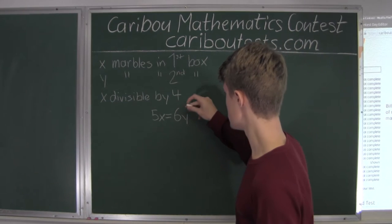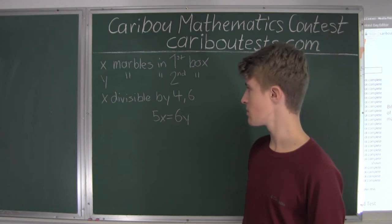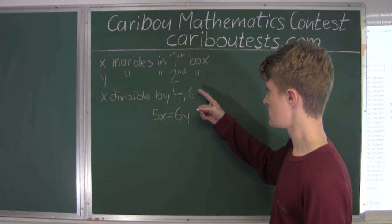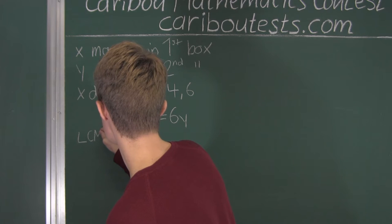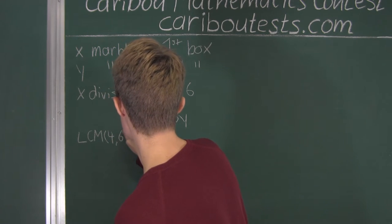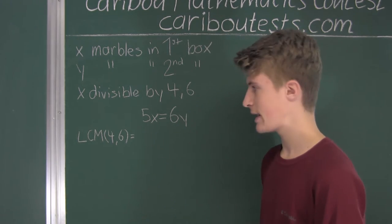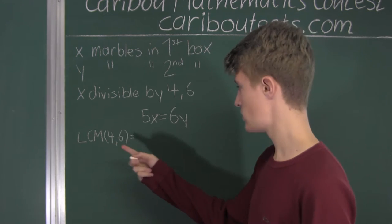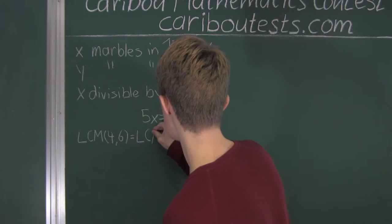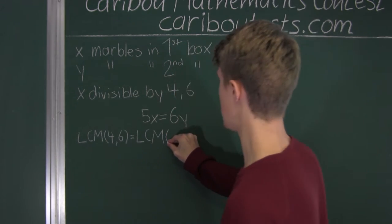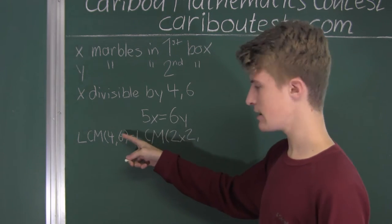So not only is X divisible by 4, but it must also be divisible by 6. That means X must be divisible by the lowest common multiple of 4 and 6. To find the LCM, we find the prime factorization of both numbers: 4 = 2 × 2, and 6 = 2 × 3. Our prime factors are 2 and 3.